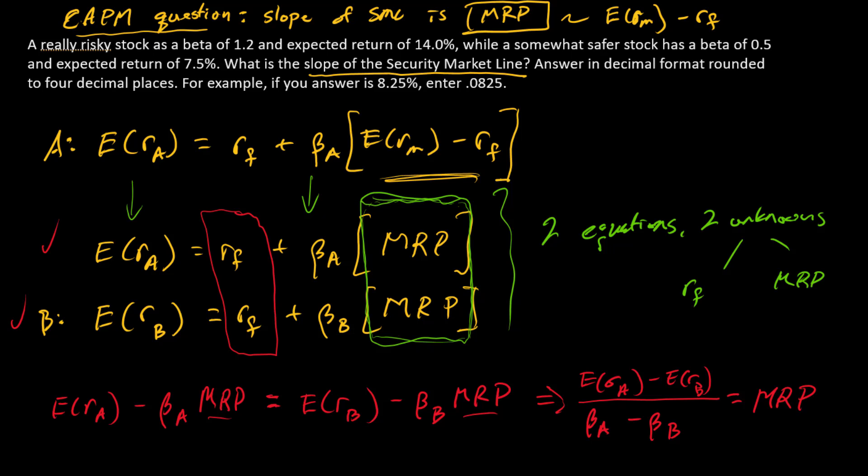And so once I'm here, I can just insert values and be done. I'm going to go this way now. So the market risk premium is expected return of A minus expected return of B. So 0.14 minus 0.075 divided by the difference in betas. So in the denominator, I have 1.2 minus 0.5. And that is 0.0986.